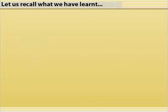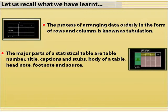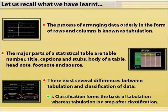Let us recall what we have learnt. The process of arranging data orderly in the form of rows and columns is known as tabulation. The major parts of a statistical table are table number, title, captions and stubs, body of a table, headnote, footnote and source. There exist several differences between tabulation and classification of data.